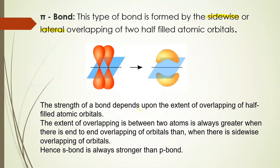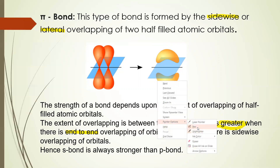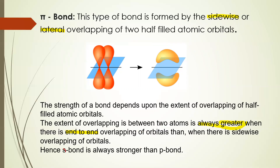The strength of the bond depends upon the extent of overlapping of half-filled atomic orbitals. The extent of overlapping between two atoms is always greater when there is end-to-end overlapping than sidewise. End-to-end overlapping takes place and forms a sigma bond, whereas side-to-side overlapping takes place and gives rise to a pi bond. So we can say sigma bond is always stronger than the pi bond.